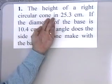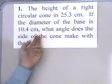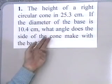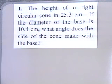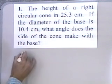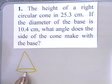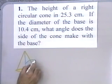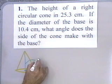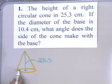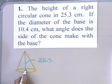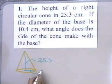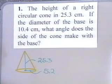For problem number one, the height of a right circular cone is 25.3 centimeters. If the diameter of the base is 10.4 centimeters, what angle does the side of the cone make with the base? I'm going to draw a right circular cone. The base is a circle and the vertex is directly above the base. The height down to the center of this circle is 25.3 centimeters. The diameter of the base is 10.4 centimeters, so the radius is 5.2 centimeters, and this is a right angle.